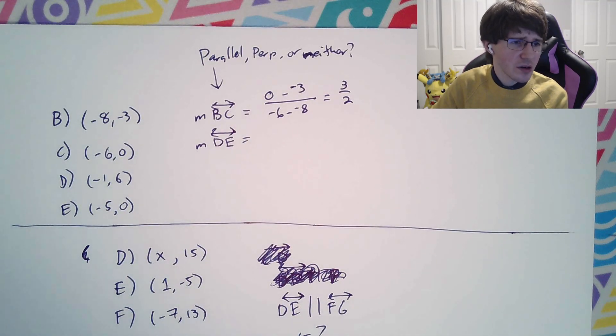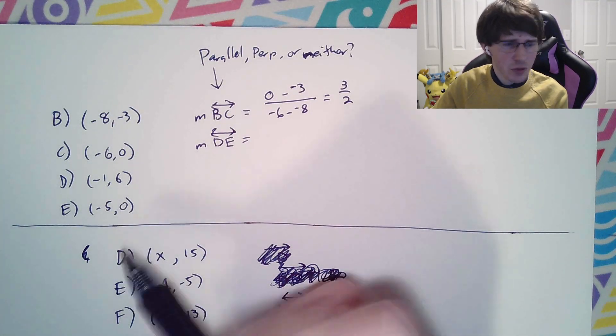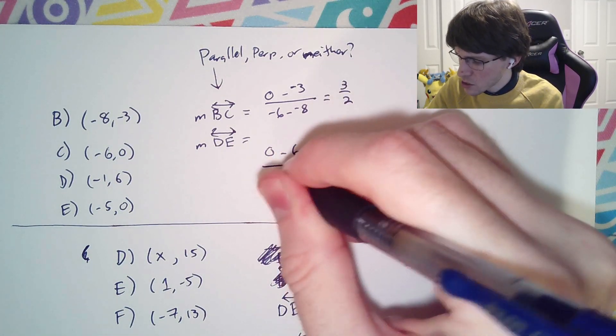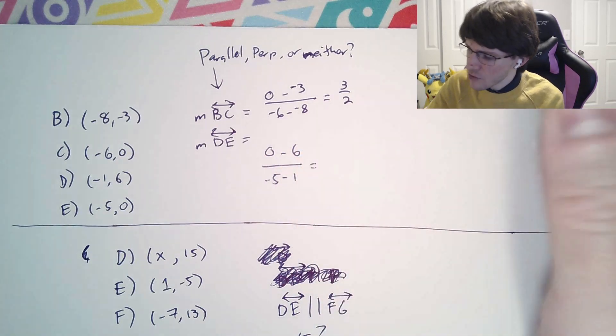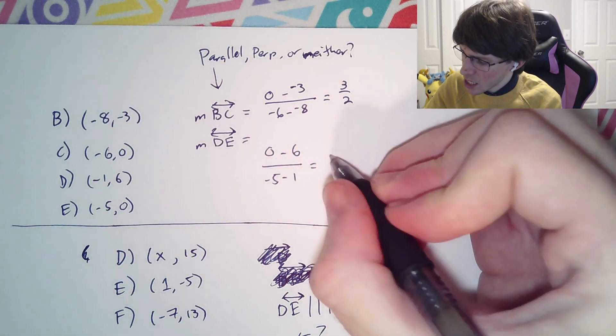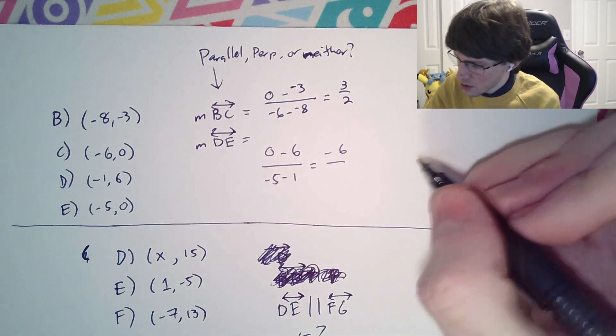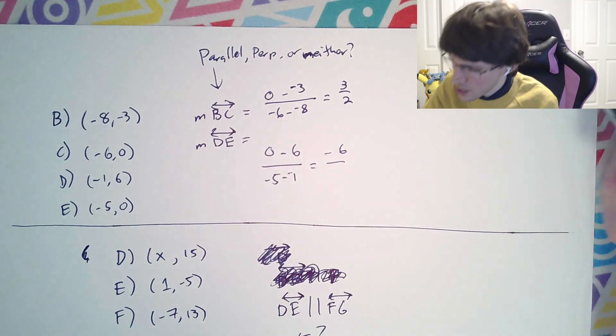Likewise, doing this next one, for DE, the slope of this one, we have our y2 minus y1 over x2 minus x1. If we have that, I'm going to do this one by hand. Negative 6 divided by, it looks like, I wrote minus negative 1.